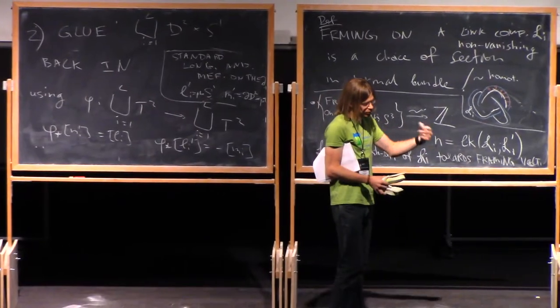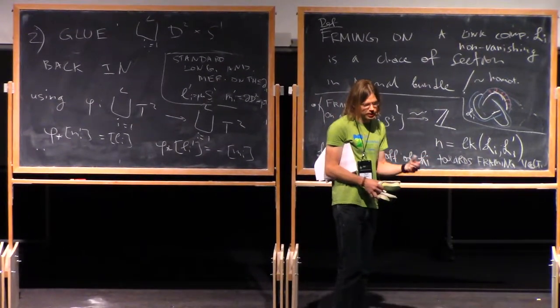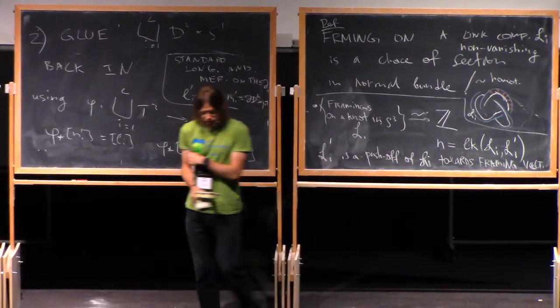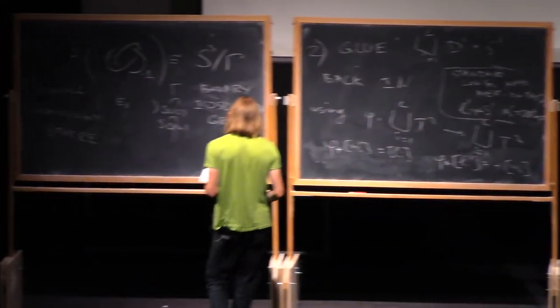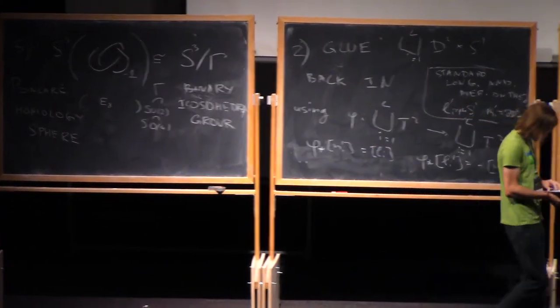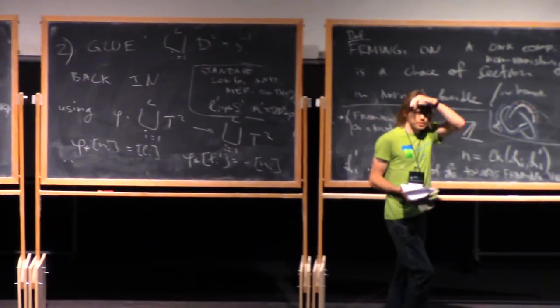Of course, you can see the right-hand trefoil is plus one, but this will be opposite orientation. Thanks. Okay, any other questions?